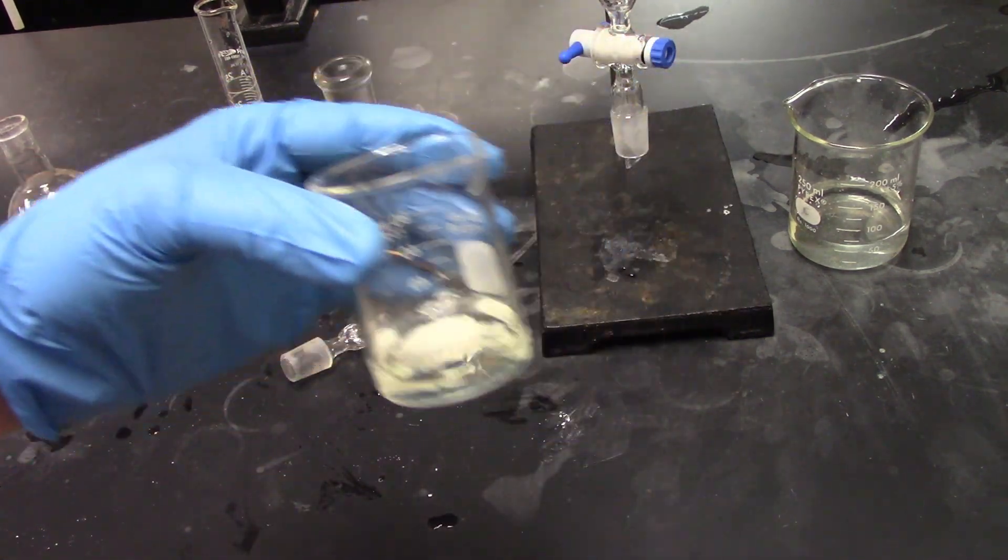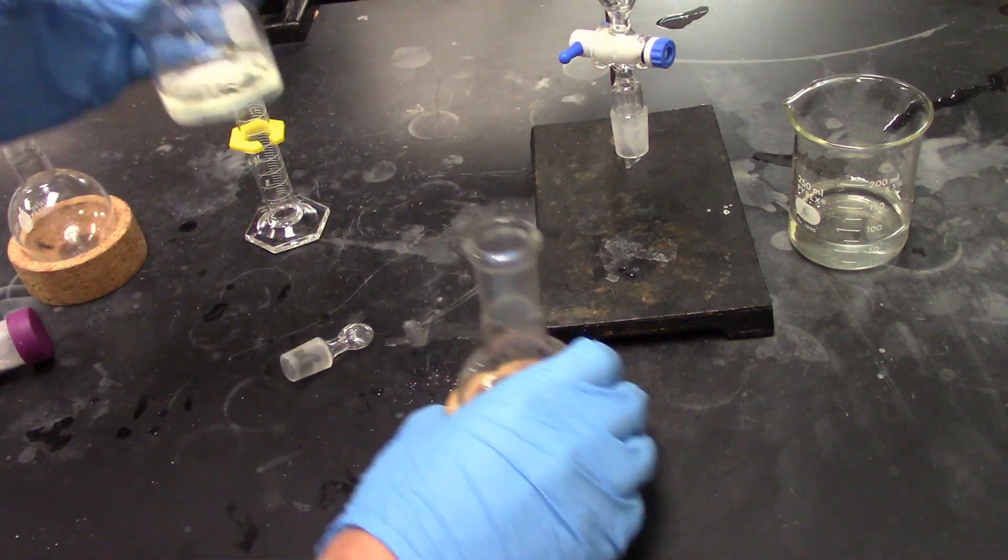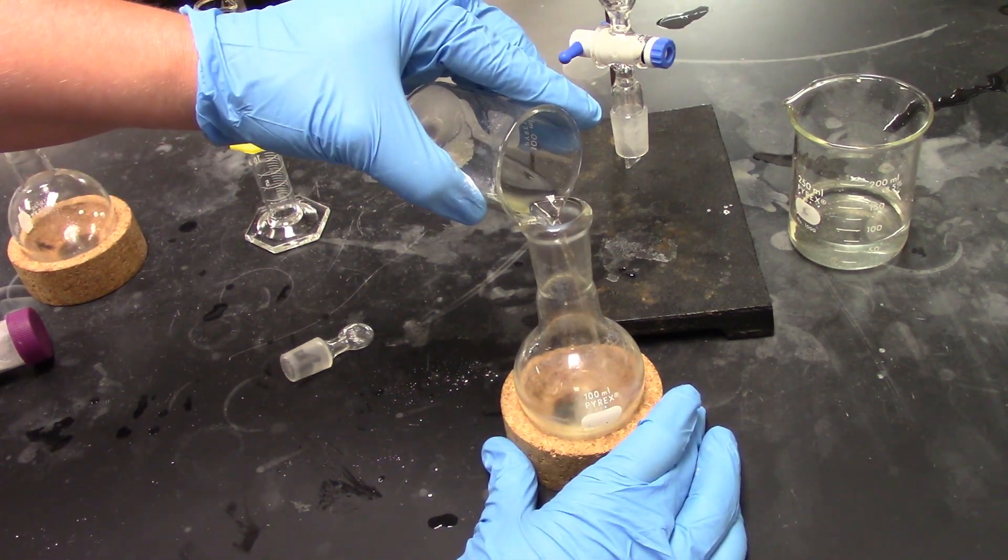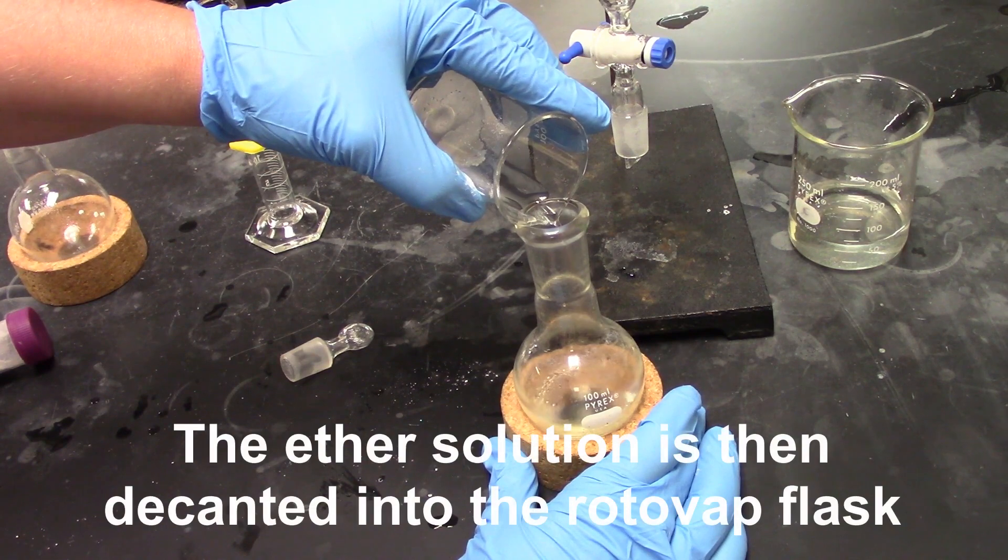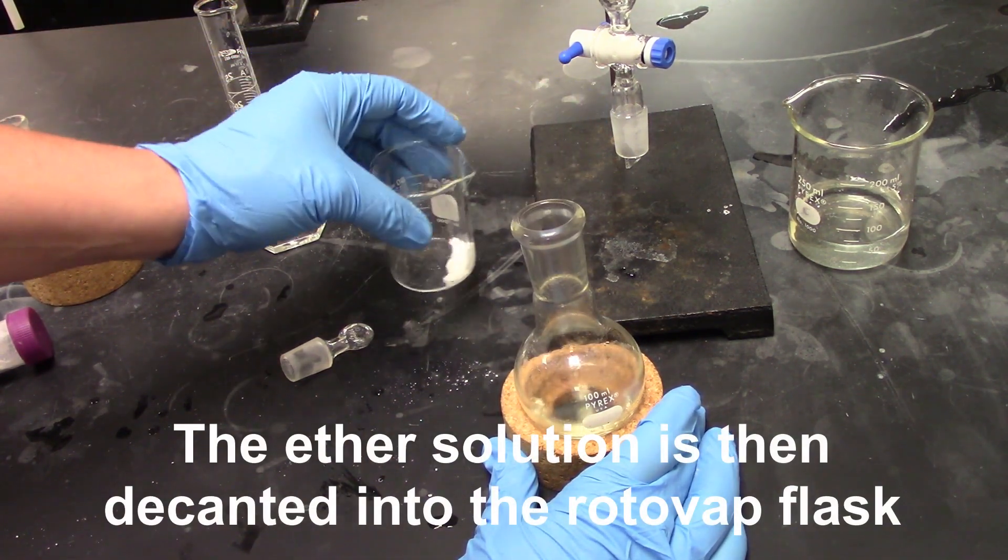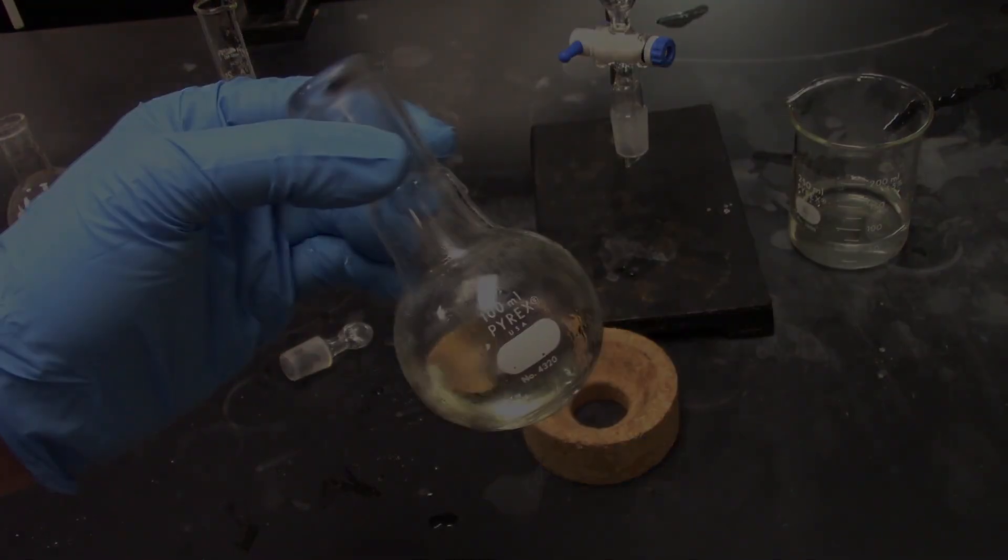Alright, so we've got the snow globe effect. I've got a pre-weighed rotary evaporator flask here. So we're going to decant off, leaving the anhydrous magnesium sulfate—I guess it's not anhydrous anymore. Alright, now we're ready to take this to the rotovap.